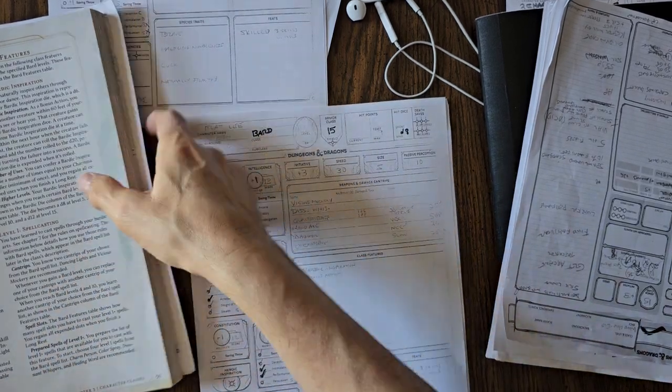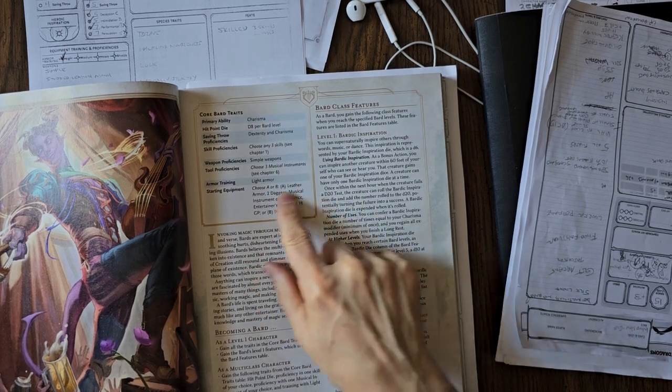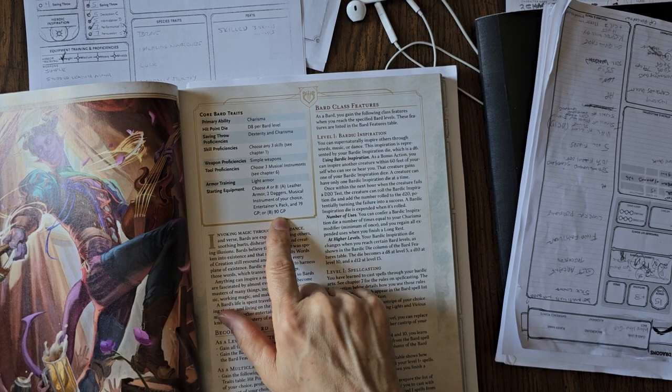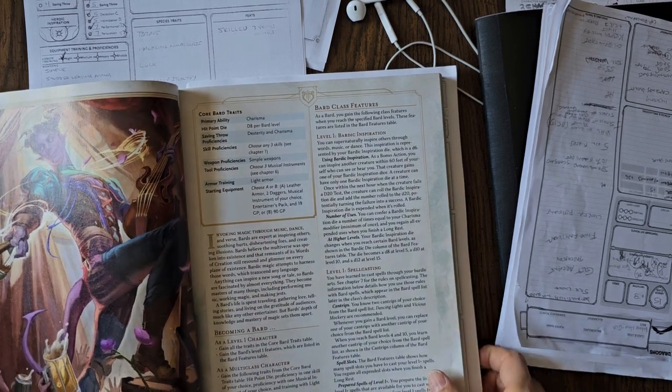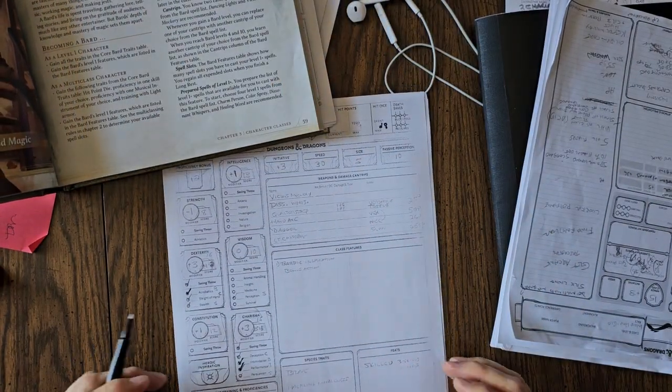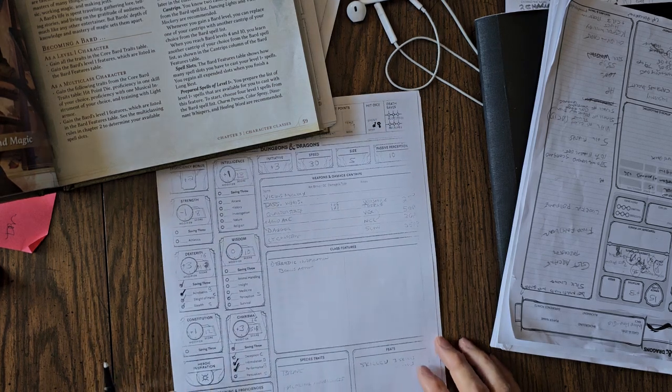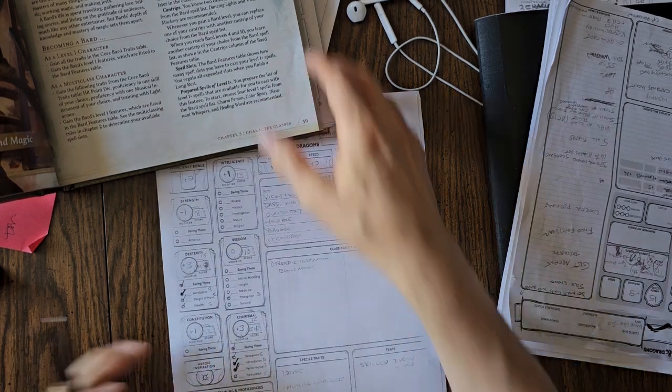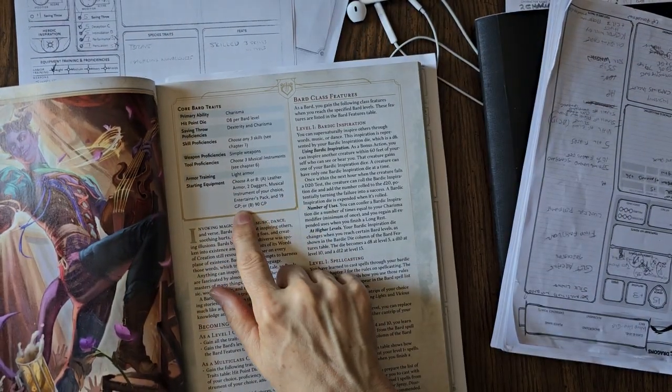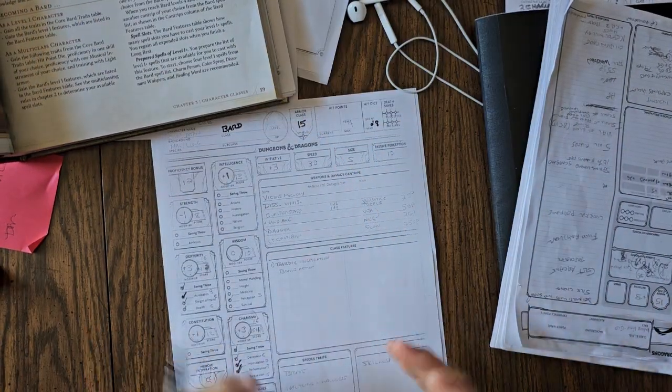That's not something you start with under starting equipment. Here where it says starting equipment, choose A or B. A, you get leather armor, two daggers, musical instrument, blah blah blah. Or you can just take 90 gold pieces. And that's what I did. I took 90 gold pieces because we're going to buy our leather armor separately. I think it costs 45 gold pieces.